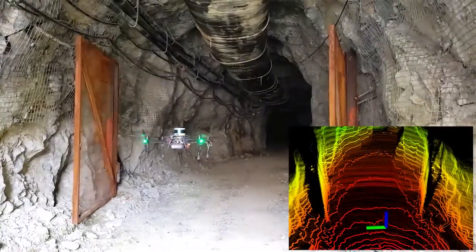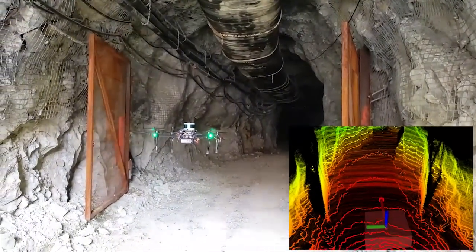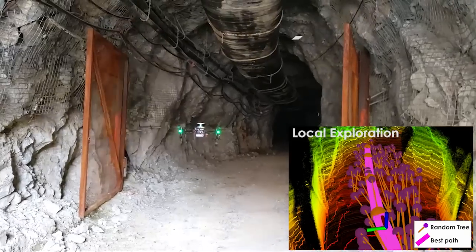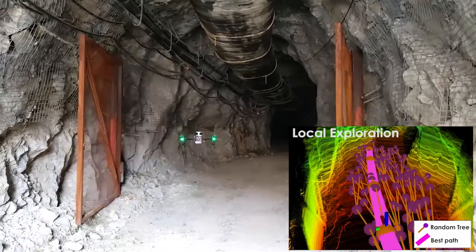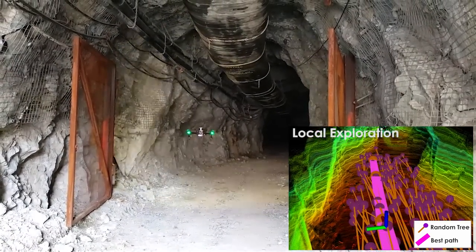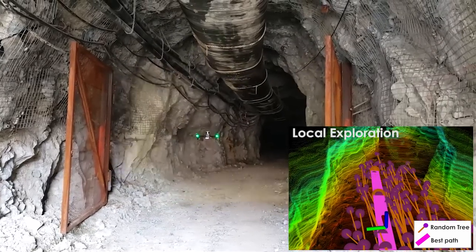The local exploration layer is responsible for planning collision-free and safety-aware paths to explore the environment within a sliding local volume, while the global planning layer aims to relocate the robot to unexplored frontiers, ensuring continuous exploration of the environment in case the robot reaches a dead end.